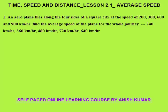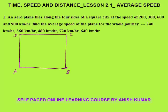The first question says that an aeroplane flies along the four sides of a square city at speeds of 200, 300, 600, and 900 km per hour. Find the average speed of the plane for the whole journey. Let me make a diagram — this is the square city A, B, C, D. The plane travels AB at 200, BC at 300, CD at 600, and DA at 900 km per hour.